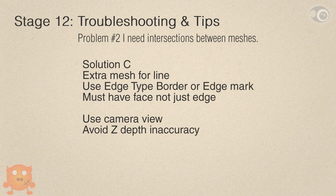Solution C: an extra mesh for the line, then use edge type border or edge mark. Essentially, this is introducing a very thin open mesh at the intersection that only edge type border can see. But the extra mesh cannot just be an edge with no face — Freestyle cannot detect those. In other words, Freestyle needs faces to detect lines. When you are cutting or adding the mesh, use the camera view to see the edges to make sure that edges don't get hidden on Z depth inaccuracy. Also, use the mesh analysis intersect tool to find intersecting edges.